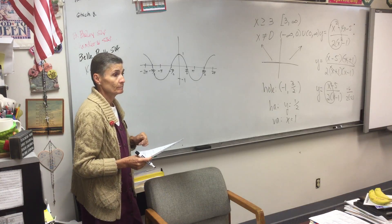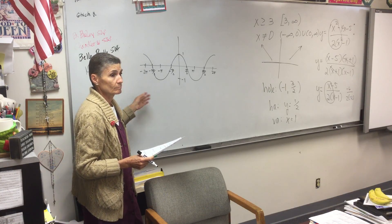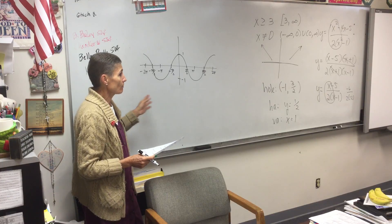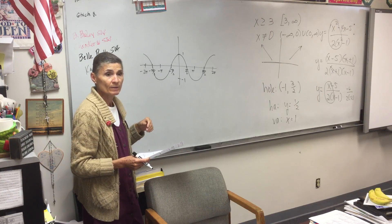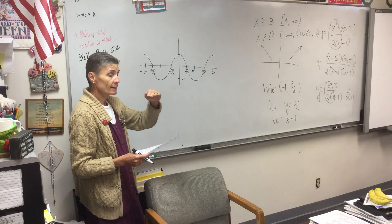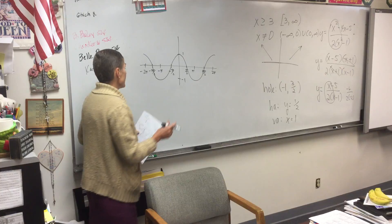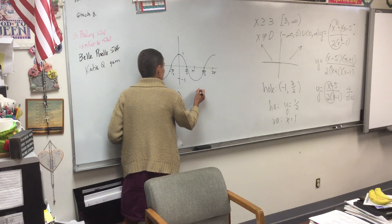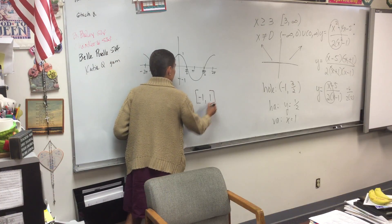What's the domain? Oh, no numbers. Goes on forever and ever. No breaks, no asymptotes, no nothing. How about range? What's your range? Negative one to one. And would that be negative one to one like this, or negative one to one like this?